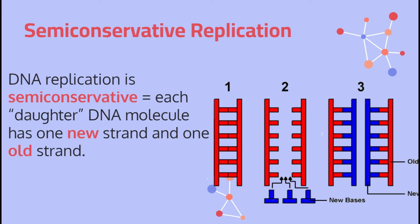Now let's get to that term: half old, half new. Semiconservative. DNA replication is semiconservative, meaning that at the end you have two full finished DNA strands, and in each strand half is the old material and half is the brand new material built by DNA polymerase. Remember that 'semi' means half and 'conservative' means old — so if something is half old, the other half is new. This is the mechanism. It doesn't make a complete copy from scratch; instead it breaks apart the DNA and duplicates so each result is half new, half old. Make sure you write in your notes that DNA replication is semiconservative.